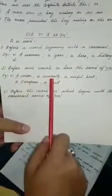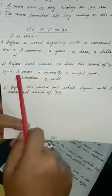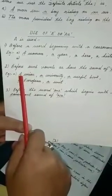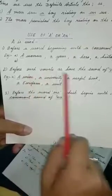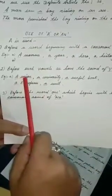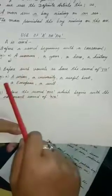Number second, before such vowels as have the sound of YU. A union, a university, a useful book, a European, a unit. Here vowel sound is not coming, that's why it is coming as U sound. But A sound is not coming. That's why I have to use A here.